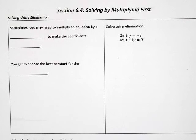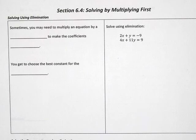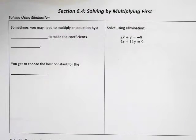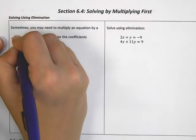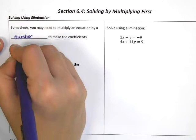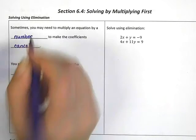Yesterday we were first learning about elimination. We said that one of the ways to solve a systems of equations was to make sure that one of the variables would eliminate. Today we're going to look at elimination problems that are slightly more complicated. Sometimes you might need to multiply an equation by a number in order to make the coefficients cancel.